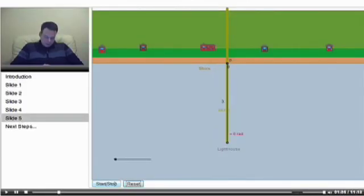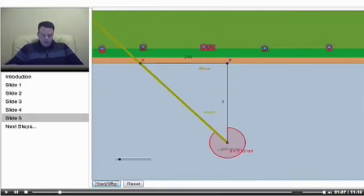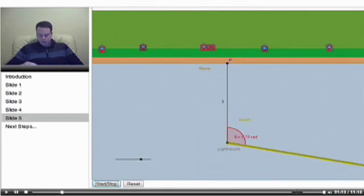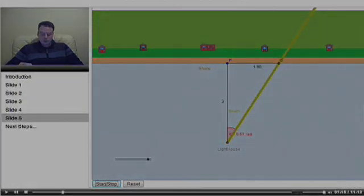So here we have an applet, and let's just start it. The lighthouse there is out in the water, and we see that yellow line is supposed to represent the beam of light.